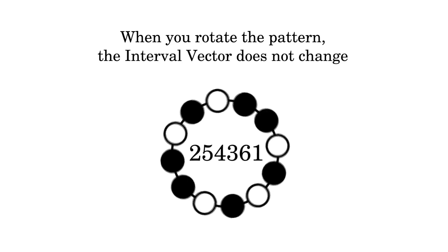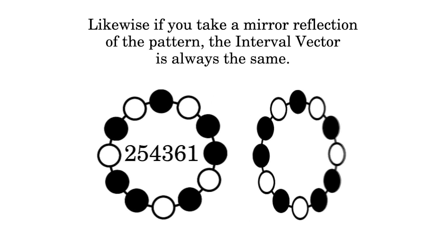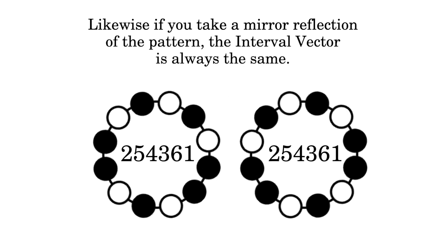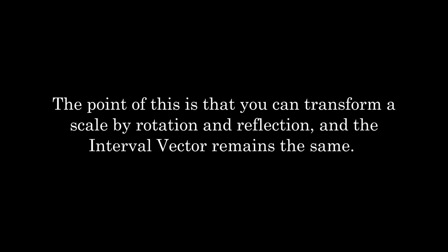When you rotate the pattern, the interval vector does not change. Likewise, if you take a mirror reflection of the pattern, the interval vector is always the same. The point of this is that you can transform a scale by rotation and reflection, and the interval vector remains the same.